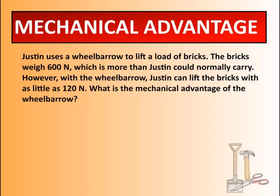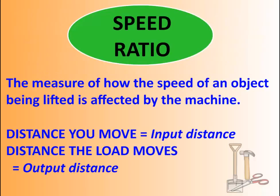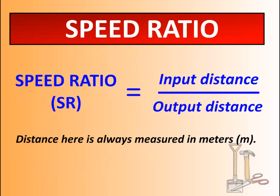Continuing in your notes, let's talk about speed ratio. Speed ratio is the measure of how the speed of an object being lifted is affected by the machine. We have the distance you move — the input distance — and the distance the load moves — the output distance. The formula for speed ratio is input distance divided by output distance.